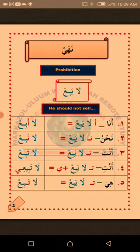Khamsa, number five: Hiya — she. So how do we change the verb la-yabi' to suit hiya? All you need to do is detach ya'un and attach ta'un. The verb la-yabi' will now become la-tabi', which means 'she should not sell.' Remember: we use ta'un to talk about a single female person, and ya'un to talk about a single male person. Talking about them does not mean talking to them directly. La'ala ka fahimt — I hope you understand.